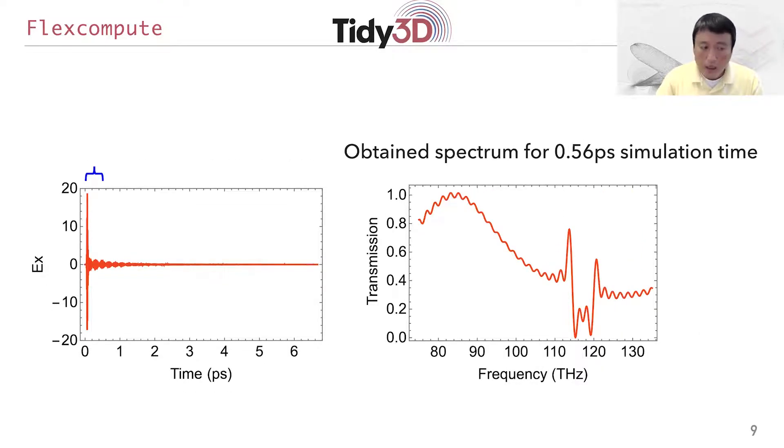On the other hand, if you don't run the simulation long enough, you won't get the desired result. Here's an example where instead we only do the Fourier transform over a simulation time of 0.56 picosecond corresponding to the blue brace on the left. In this time duration, the initial pulse has passed, and also we capture part of exponential decay of the resonance. However, the amplitude of the resonance has not decayed to zero.